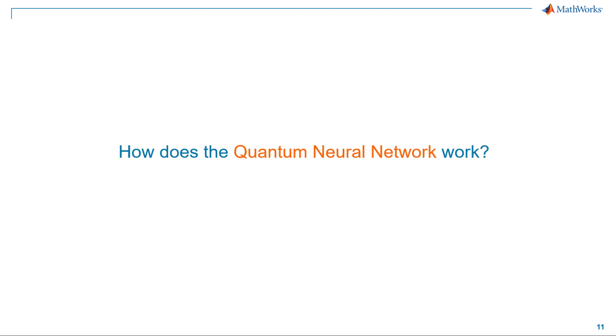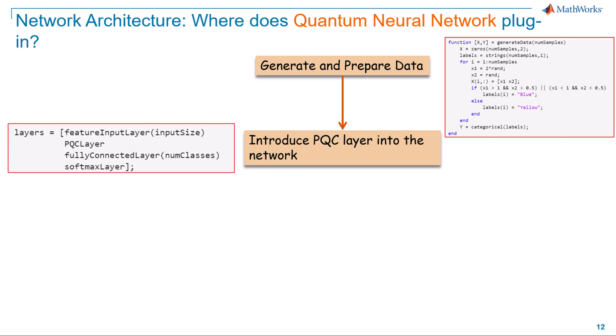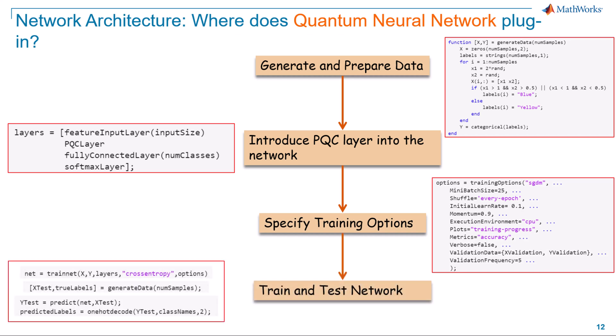Let us look at the neural network architecture to see where the quantum neural network fits in. Setting up the network structure in MATLAB is straightforward. First, generate or import your data into MATLAB. Next, define your network layers using just a few lines of code. You can then set the training options according to your requirements and proceed to train and test your model on a test dataset.